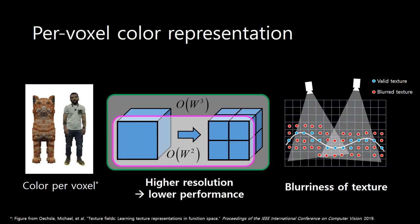The traditional online scanning methods have used per-voxel color representation to store texture information. However, the color quality is bounded by the voxel resolution. And also, the stored texture has been blurred by the geometric discordance.